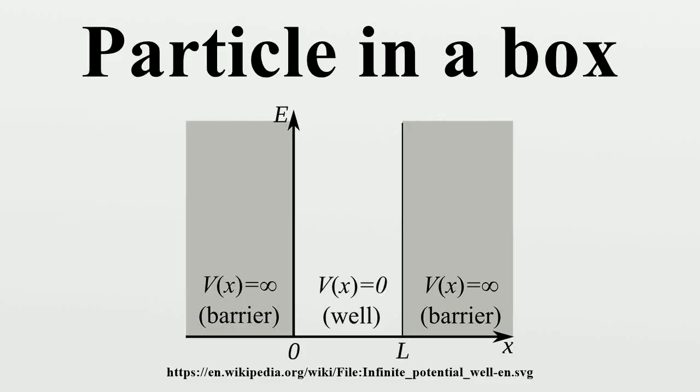In quantum mechanics, the particle in a box model describes a particle free to move in a small space surrounded by impenetrable barriers. The model is mainly used as a hypothetical example to illustrate the differences between classical and quantum systems.